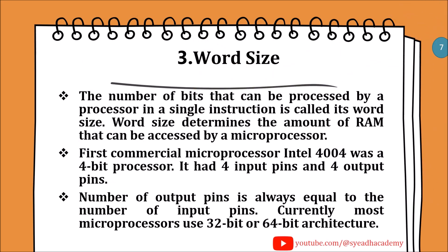Word size. The number of bits that can be processed by a processor in a single instruction is called its word size. Word size determines the amount of RAM that can be accessed by a microprocessor. The first commercial microprocessor, Intel 4004, was a 4-bit processor with 4 input pins and 4 output pins. The number of output pins is always equal to the number of input pins. Currently, most microprocessors use 32-bit or 64-bit architecture.